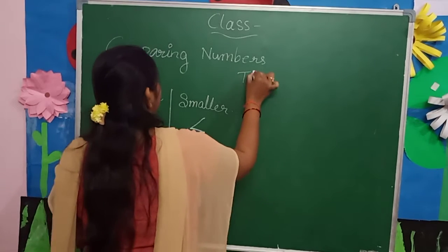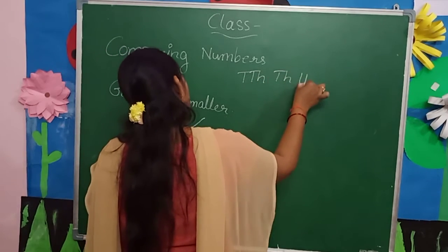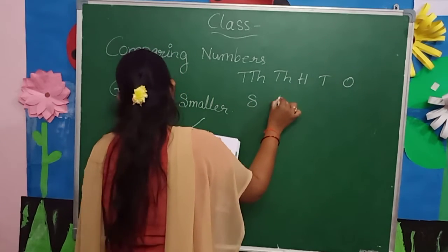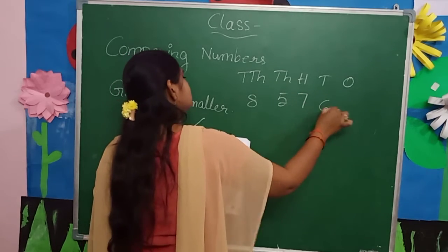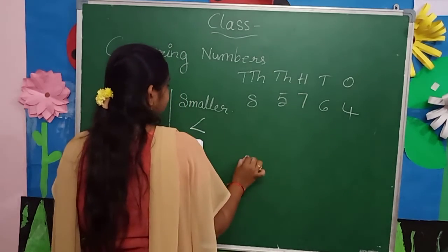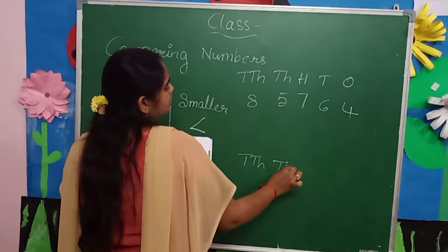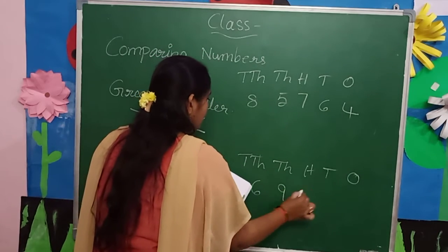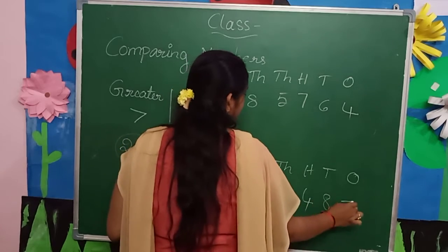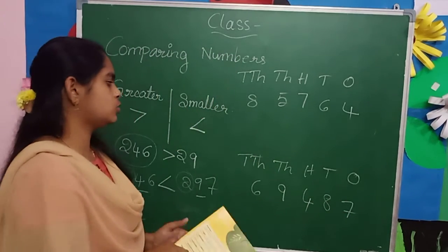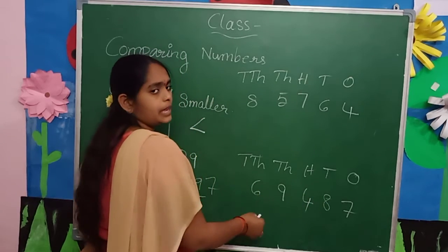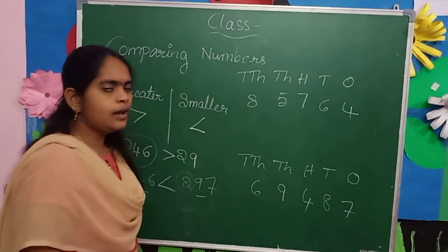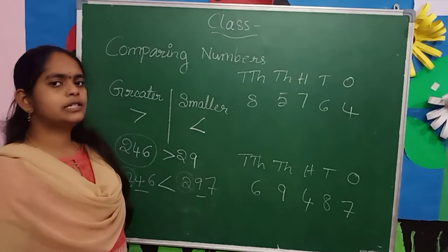Ten thousands place, thousands place, hundreds, tens, ones. Here the number is 8, 5, 7, 6, 4. And again: ten thousands place, thousands place, hundreds place, tens place, ones place — 6, 9, 4, 8, 7. Here you have got two numbers, children. Count the digits: one, two, three, four, five — five digits here. And here again five digits. Both are having the same number of digits.